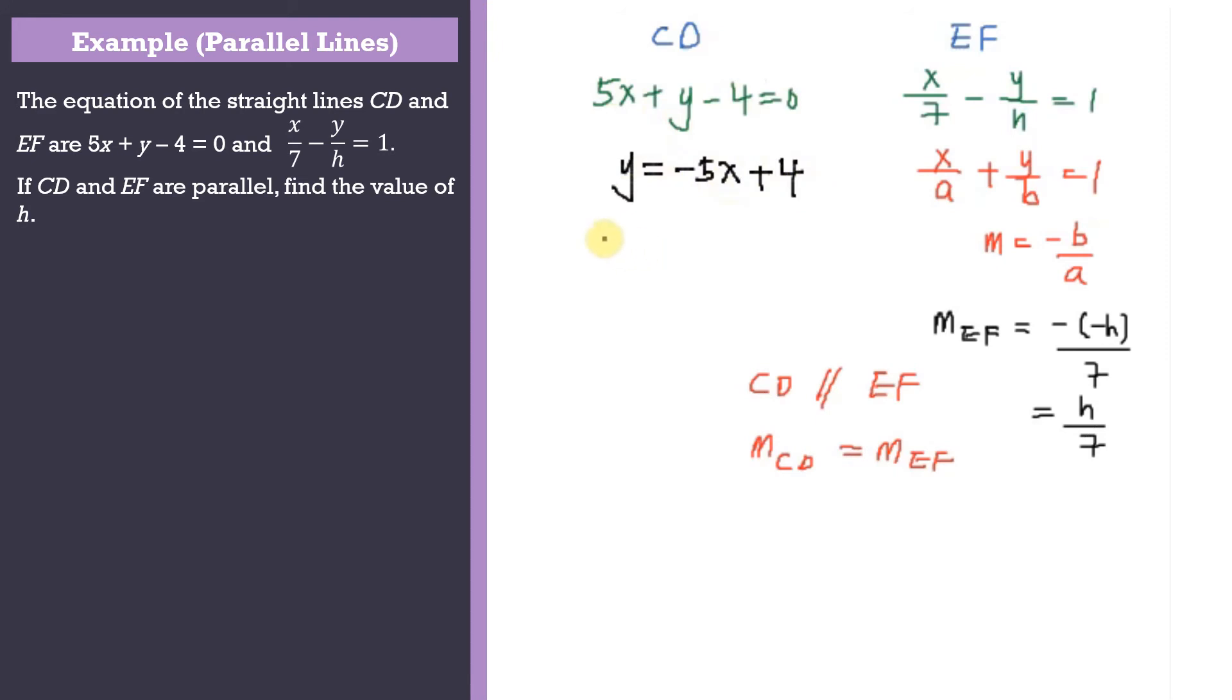CD and EF are parallel, so their gradients are equal. The gradient for CD, which is negative 5, equals the gradient for EF, which is h/7. Therefore, h equals negative 5 times 7, which is negative 35.